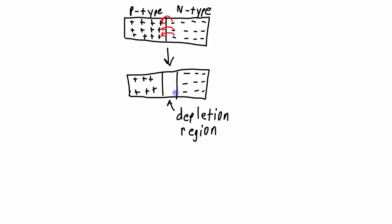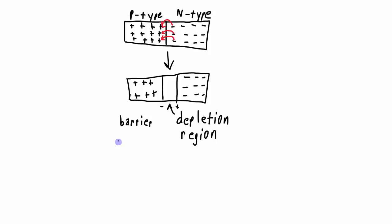Because the negative charges moved over to the positive side, that region becomes slightly negatively charged, and the other side becomes slightly positively charged. The voltage gradient here is an important feature of a PN junction, and that particular voltage is called the barrier voltage.